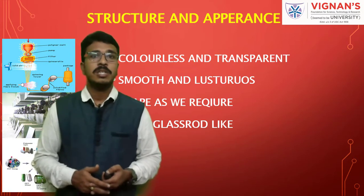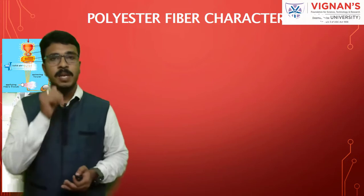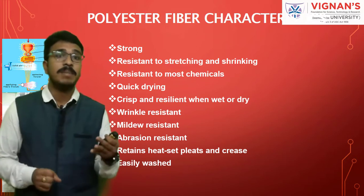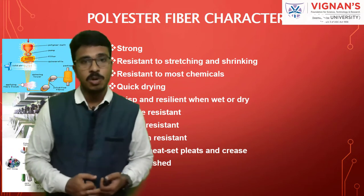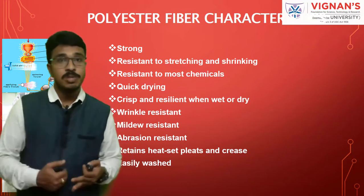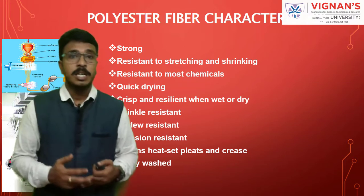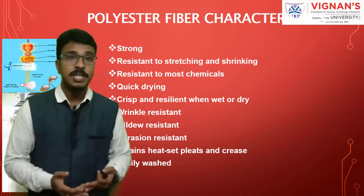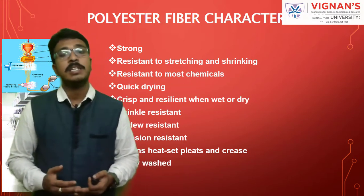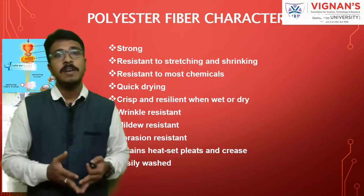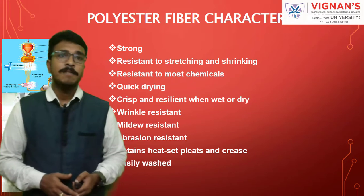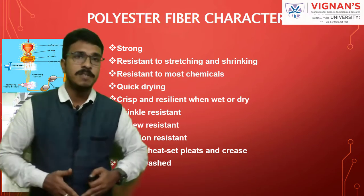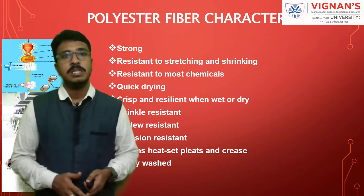The structure and appearance of general polyester is colorless and transparent, smooth and lustrous, with cross-sectional shape as required, and shiny, glass-rod-like. General fiber characteristics include: strong and resistant to stretching and shrinking, resistant to most chemicals, quick drying, crisp and resilient when wet and dry, wrinkle resistant, mildew resistant, abrasion resistant, retains heat-set pleats, and easily washable. It is because of all these characteristics that polyester is the most widely used synthetic fiber.